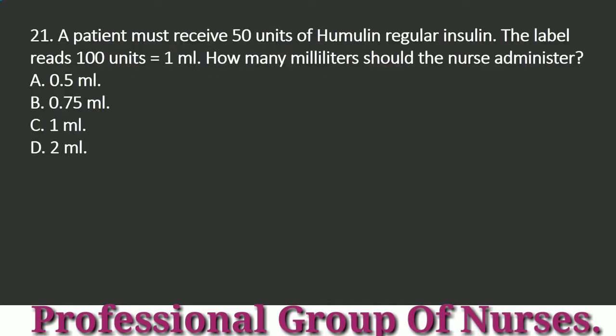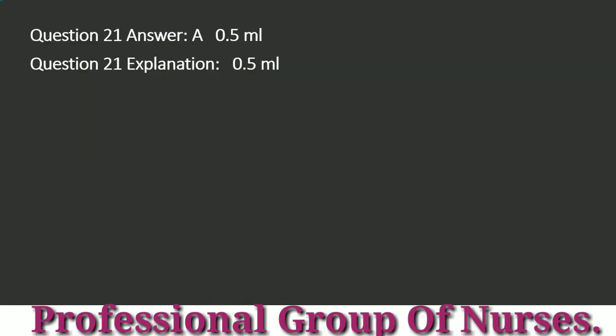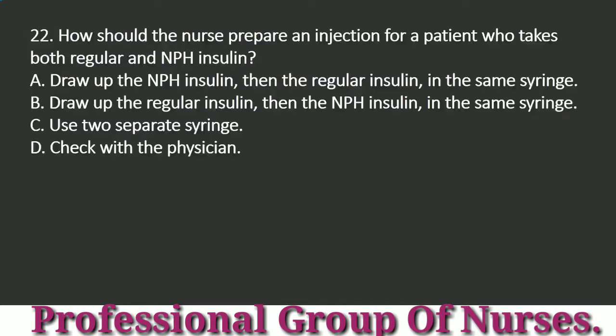Question 21: A patient must receive 50 units of Humulin regular insulin. The label reads 100 units equals 1 mL. How many mL should the nurse administer? a. 0.5 mL. b. 0.75 mL. c. 1 mL. d. 2 mL. Answer: a. 0.5 mL. Explanation: 0.5 mL.